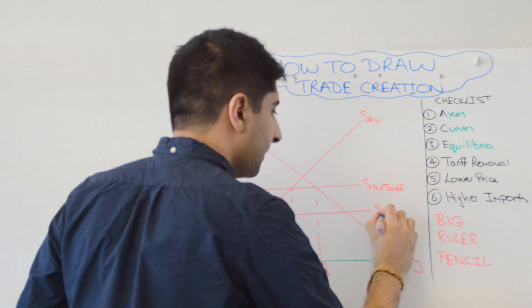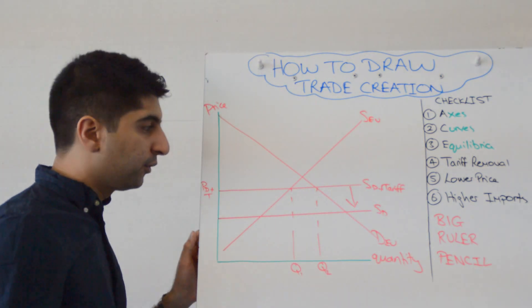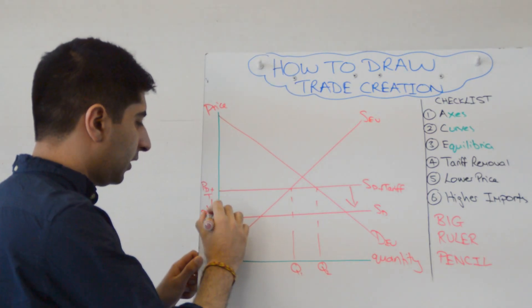So supply domestic shifts downwards to reflect now that there is no tariff on it whatsoever, which reduces the price. So you draw all of this, which reduces the price to PD.